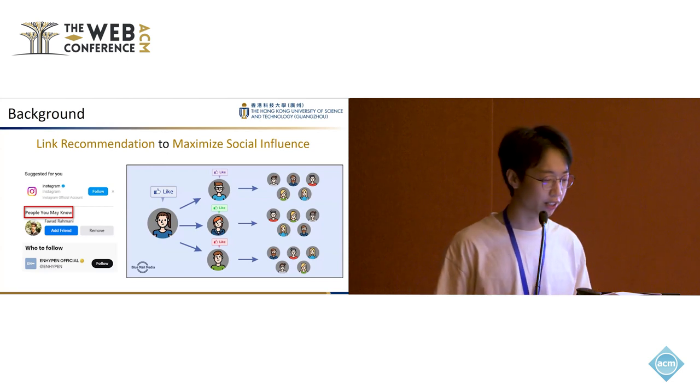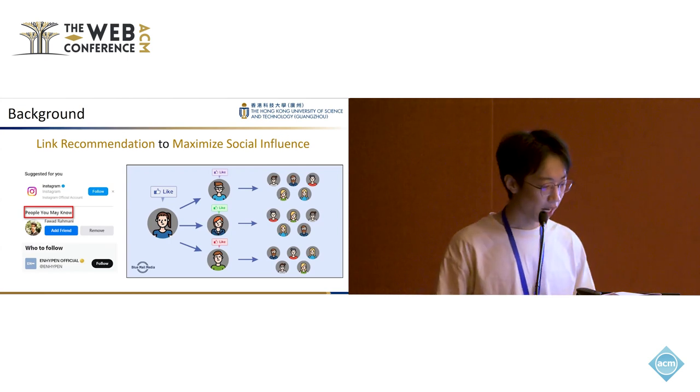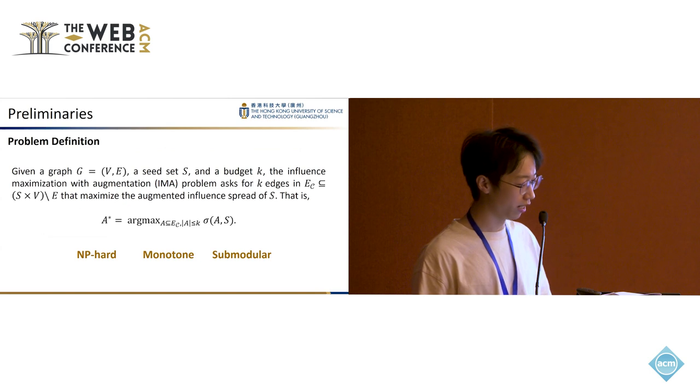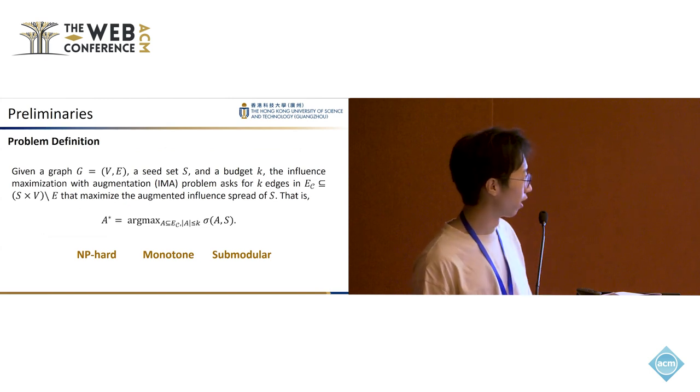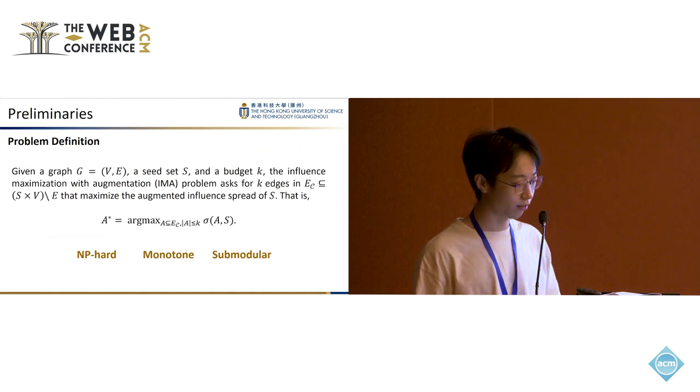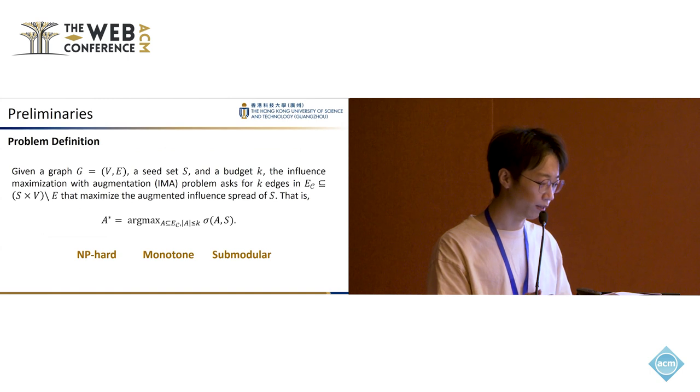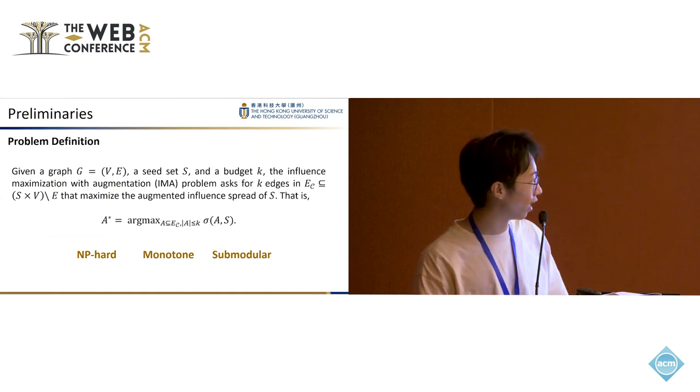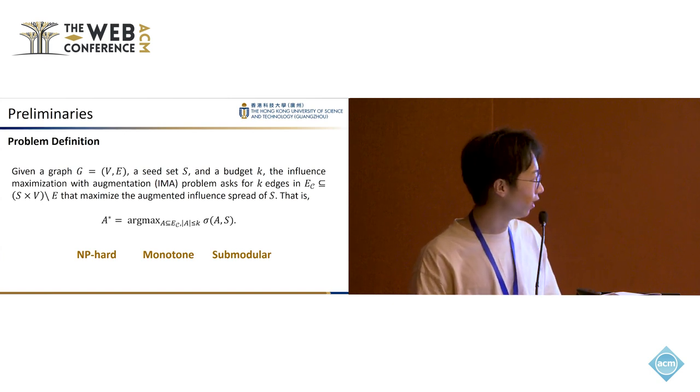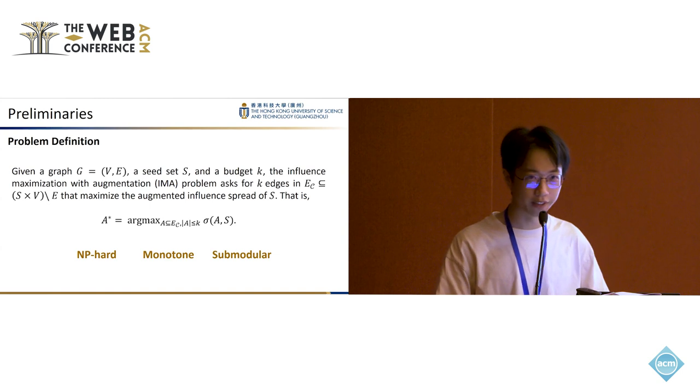The problem we are interested in here is to use link recommendation to maximize social influence of given users. Formally speaking, given a graph G, a seed set S, and a budget K, the influence maximization with augmentation problem, abbreviated as IMA, aims to identify K edges to recommend from the seeds to ordinary users in order to maximize the augmented influence spread of S. Here, sigma_A(S) means the influence of S after adding the edge set A. This problem is theoretically very hard and has been proven to be NP-hard.